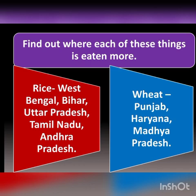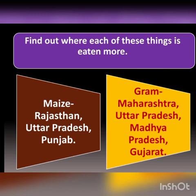Wheat is produced on a large scale in Punjab, Haryana, and Madhya Pradesh. Maize is produced in Rajasthan, Uttar Pradesh, and Punjab. Whereas gram is produced on a large scale in Maharashtra, Uttar Pradesh, Madhya Pradesh, and Gujarat. So we know that our food habit depends on the place we live.